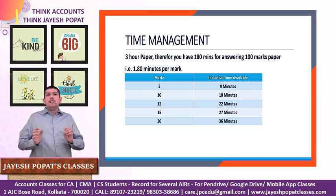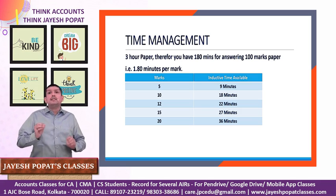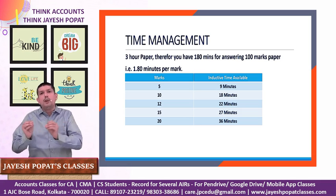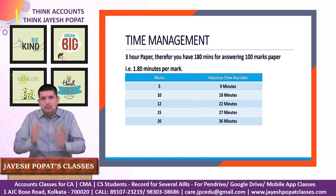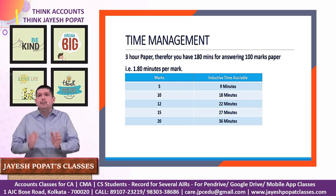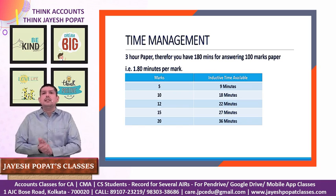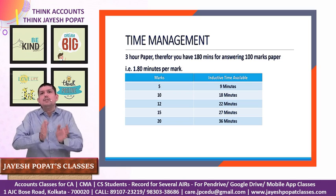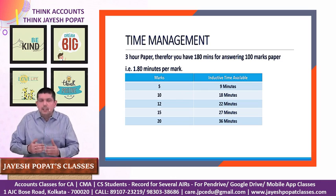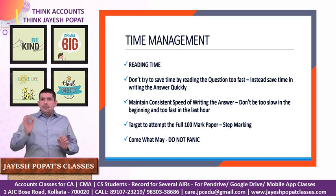Now let's talk about time management. It is a three-hour paper — 180 minutes — in which you must answer 100 marks. That works out to 1.8 minutes per mark. As an indicative guide: for a 5-mark question, spend approximately 9 minutes; for 10 marks, 18 minutes; for 12 marks, 22 minutes; for 15 marks, 27 minutes; and for 20 marks, a maximum of 36 minutes. These are indicative figures — some questions may take slightly more or less — but you should not exceed these benchmarks.